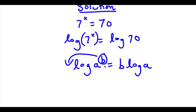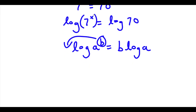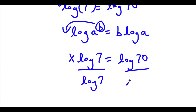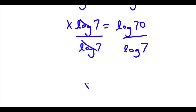The reason this property is so important is that x is an exponent, and solving for an exponent is really hard, especially when it's going to be a decimal or fraction. But using this property, x turns into a term and not an exponent. So I can move the exponent x to the front, giving x times log 7 is equal to log 70. Now I can divide both sides by log 7, so these cancel out and I'm left with x equals log 70 over log 7.